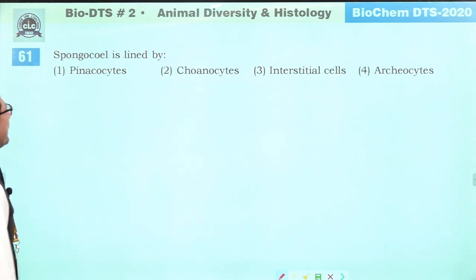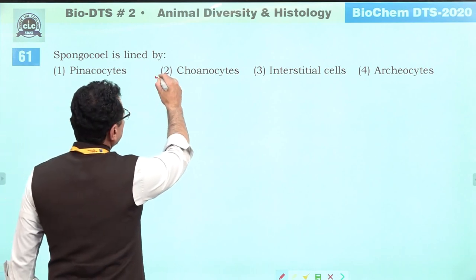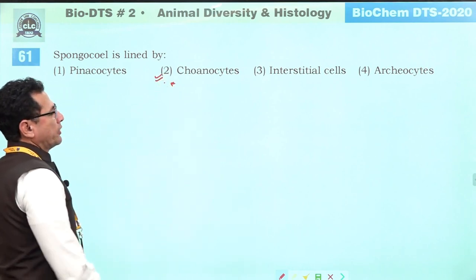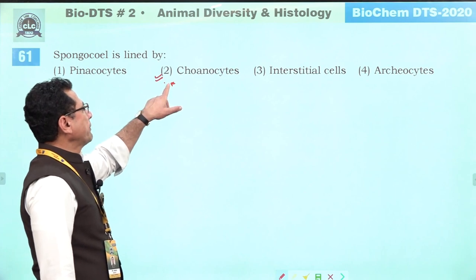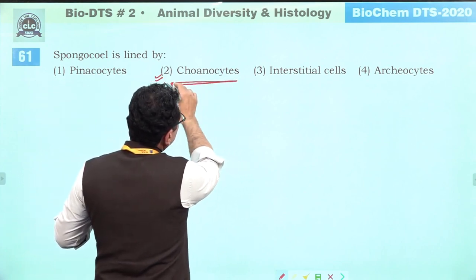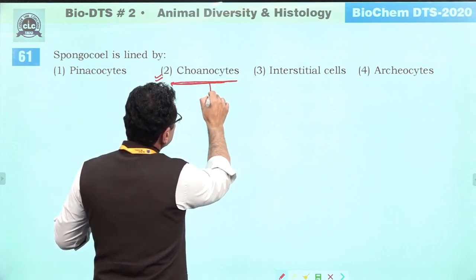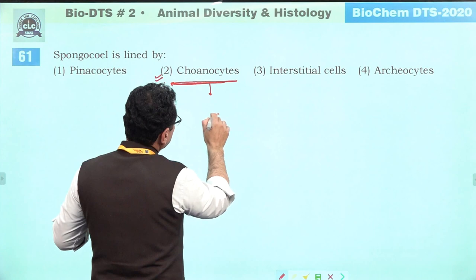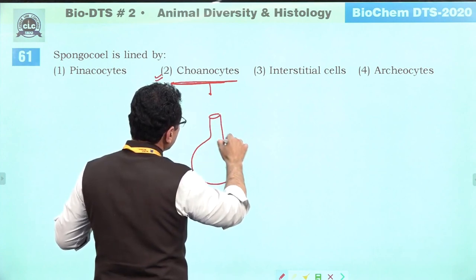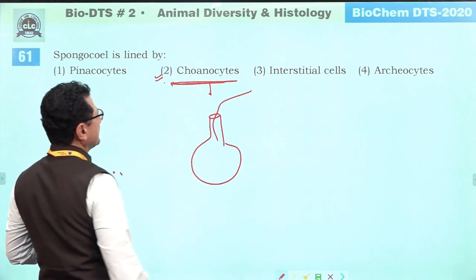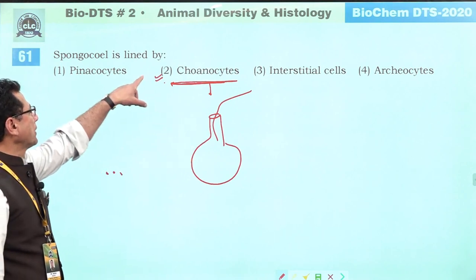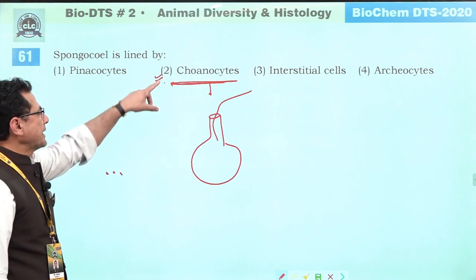Spongocoel is lined by choanoderm, which is formed by cells called choanocytes — also known as collar cells or flagellated cells. These cells form the choanoderm. Answer is second.